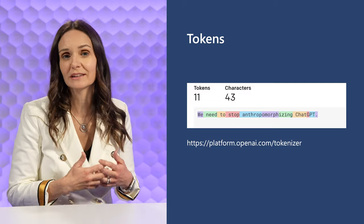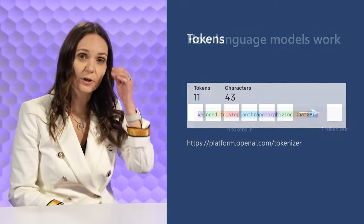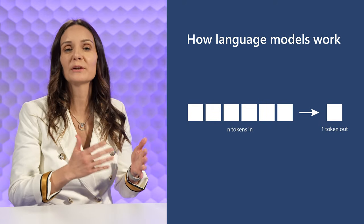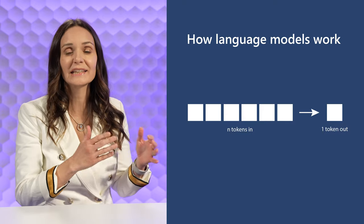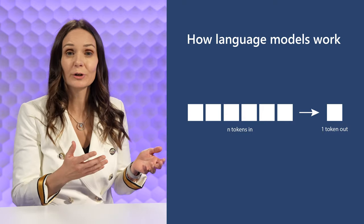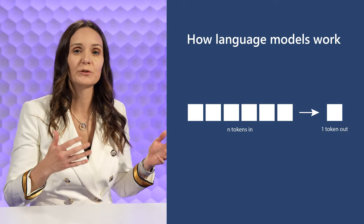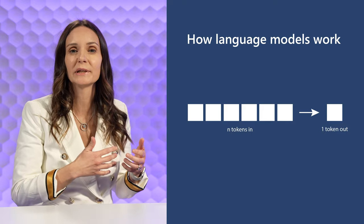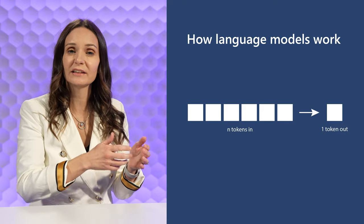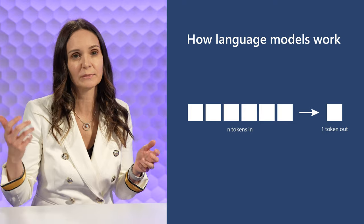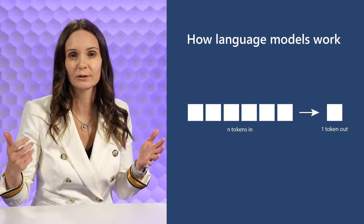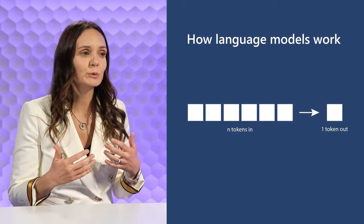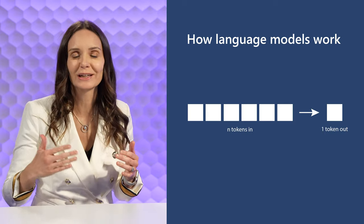Now we know what a token is, so let's go back to our diagram and understand how language models work. They take N tokens in — meaning it could be a few words, a sentence, a few paragraphs, or a whole page, depending on the size of the model and how many tokens it supports — and then it produces one token out, meaning a word or part of a word. You may be thinking: I've worked with ChatGPT and I certainly don't just get one token out.